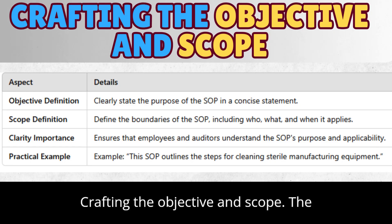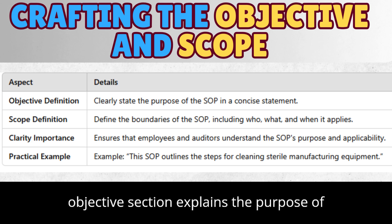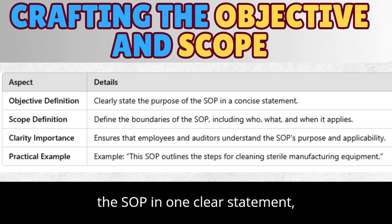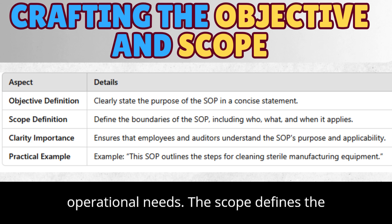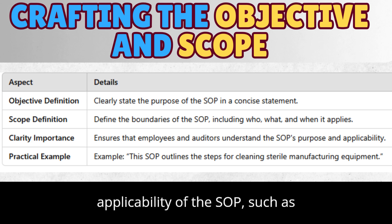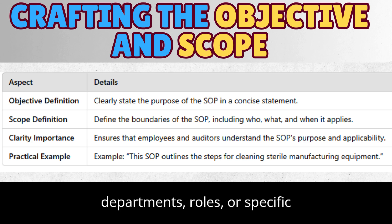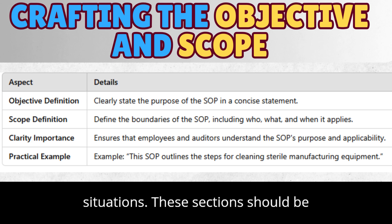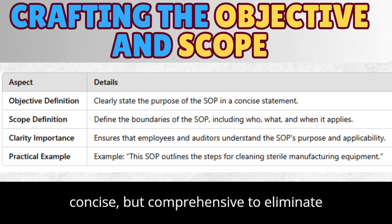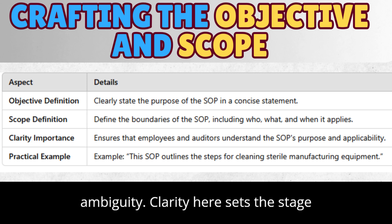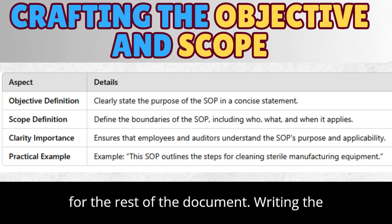Crafting the objective and scope: The objective section explains the purpose of the SOP in one clear statement, aligning it with regulatory and operational needs. The scope defines the applicability of the SOP, such as departments, roles, or specific situations. These sections should be concise but comprehensive to eliminate ambiguity. Clarity here sets the stage for the rest of the document.